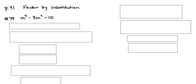This is problem number 79 from page 41 and the directions are to factor by substitution. So we have an expression that needs to be factored, it's a trinomial. It looks a lot like the quadratic expressions we are used to factoring, so I like to call this one a quadratic in disguise.